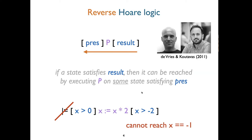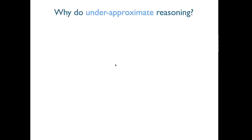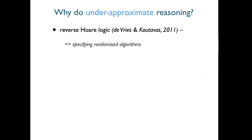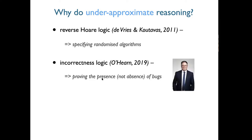The original motivation that these authors pursued in the reverse core logic paper was really about specifying randomized algorithms — proving that all random permutations you want can actually be reached via different random number streams. Skip forward several years, and Peter O'Hearn independently investigated this kind of reasoning from a different perspective: with the goal of proving the presence of bugs. There's a duality here to Dijkstra's mantra about proving the absence of bugs.